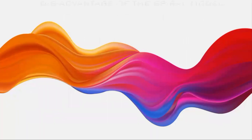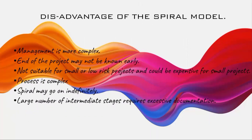Speaking about the disadvantages of the spiral model: since it is used for high-risk involvement cases, management becomes complex and you cannot predict the end result in the initial phase. It is not suitable for small or low-risk projects and could be expensive for small projects. The project structure can be complex, and the number of intermediate stages requires excessive documentation — each phase of the spiral model may require specific documents.